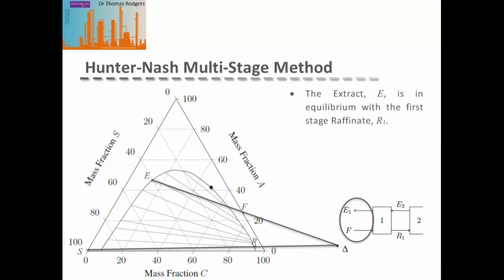We have already drawn our first operating line, which is the line between our top product extract, our feed, and our operating point, shown in grey. Now this extract is in equilibrium with the first stage raffinate. So we can use our equilibrium tie lines to draw our equilibrium line between this extract and the raffinate.